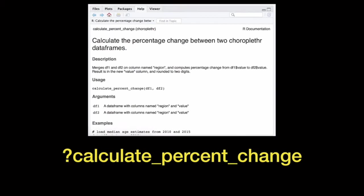Take a moment to read the help file for the function calculate_percent_change. Recall that all data in Choropleth R is in the same form: a data frame with one column called region and one column called value.